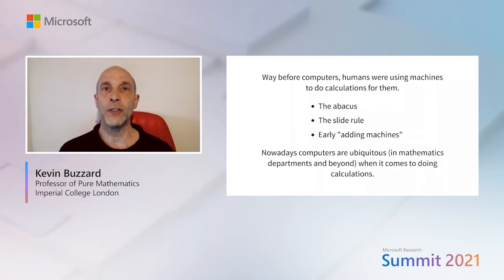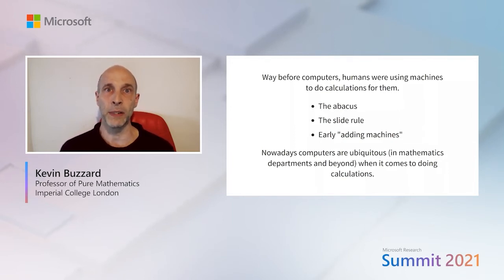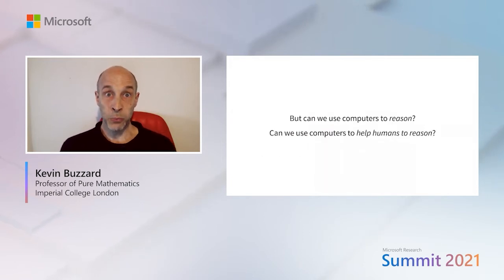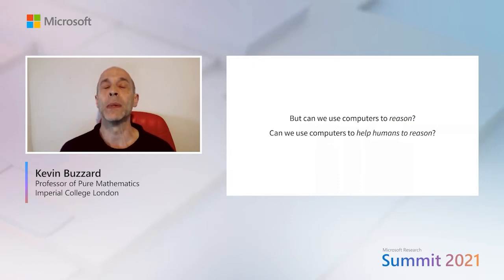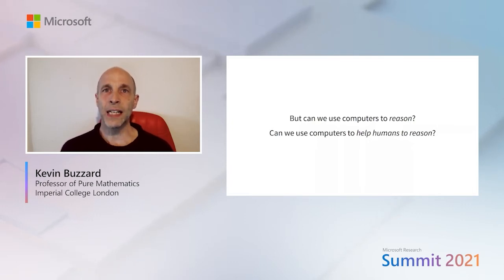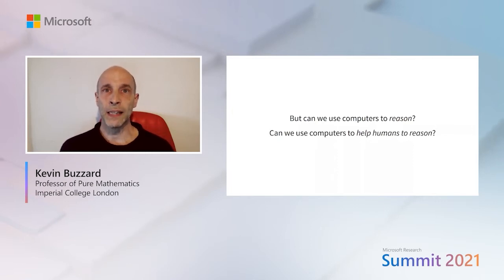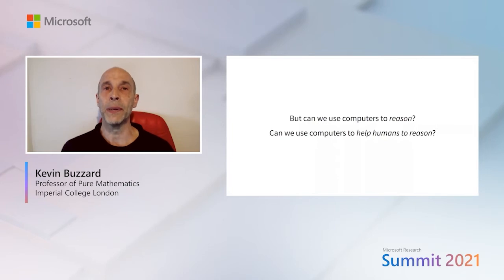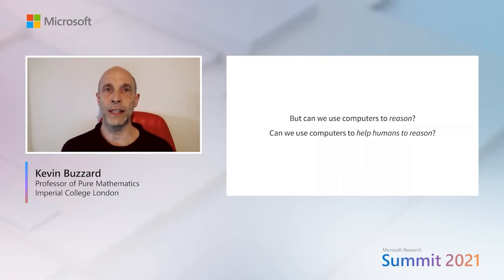But the question is: what about pure mathematicians who want to do reasoning? Can we use computers to reason, or to help humans with their reasoning? Computers are used far less often by pure mathematicians than applied mathematicians. For example, in the 1990s, Richard Taylor and Andrew Wiles proved Fermat's last theorem — an old question open for hundreds of years. The proof did not involve computers at all; it just involved using complex structures and proving theorems about them using pen and paper. So why are computers not being used in this domain?